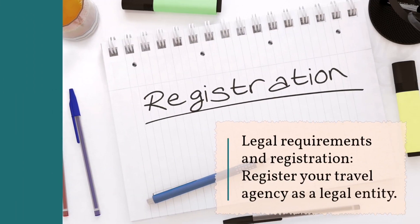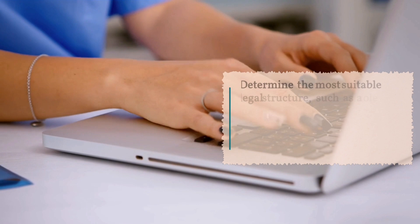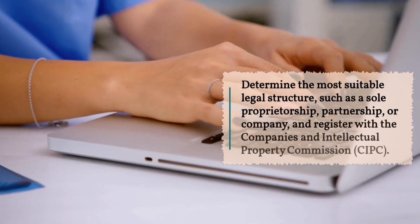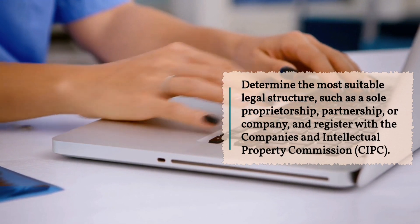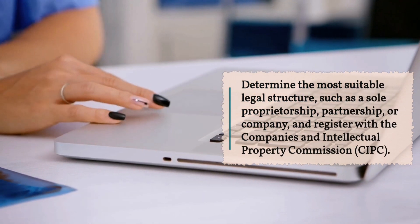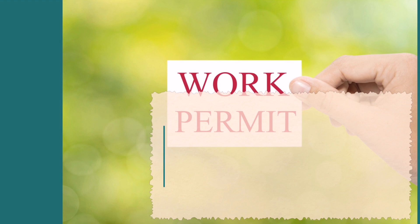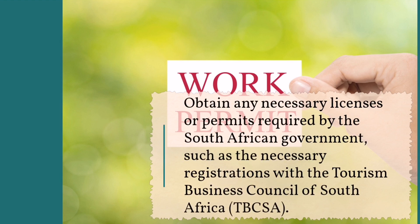Step 4: Legal requirements and registration. Register your travel agency as a legal entity. Determine the most suitable legal structure, such as a sole proprietorship, partnership, or company, and register with the Companies and Intellectual Property Commission. Obtain any necessary licenses or permits required by the South African government, such as the necessary registration with the Tourism Business Council of South Africa.